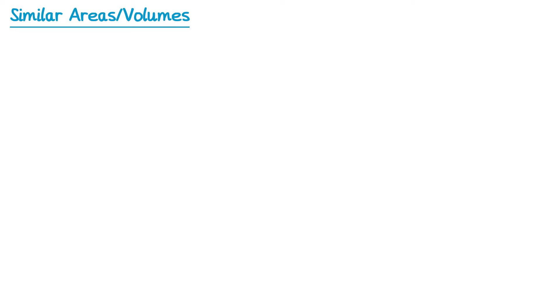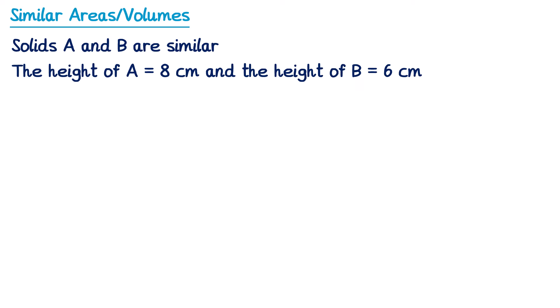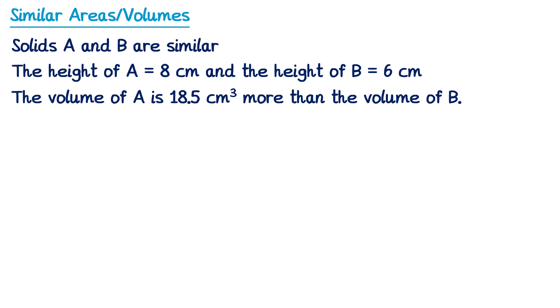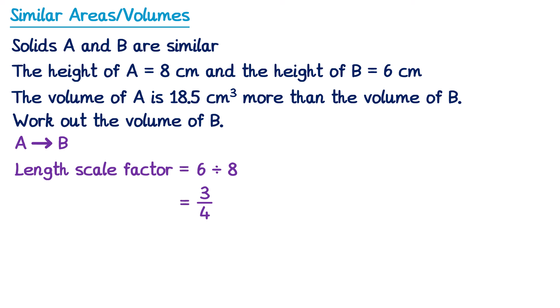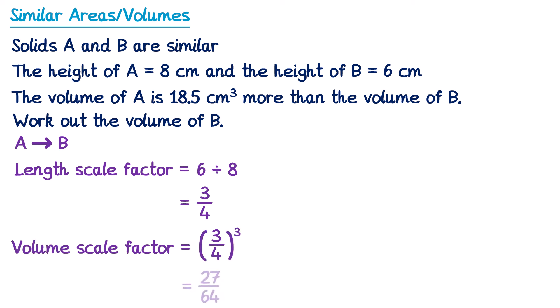Now let's look at one more quite tricky question. We have two similar solids A and B — we're told the height of A and the height of B, and we're told the volume of A is 18.5cm cubed more than the volume of B. We need to find the volume of B. Since we have both heights we can work out the length scale factor going from A to B: 6 divided by 8 simplifies to 3 quarters. We cube this to get the volume scale factor: 3 quarters cubed is 27 over 64.